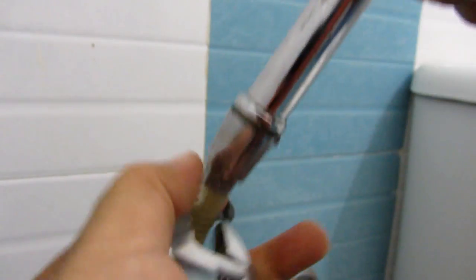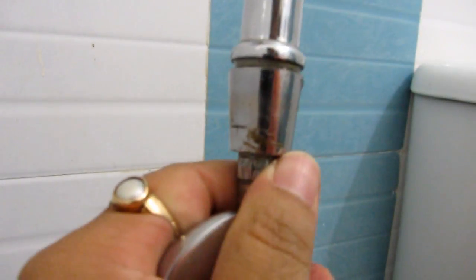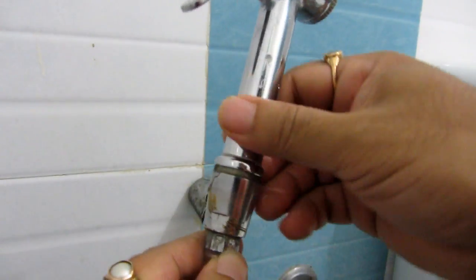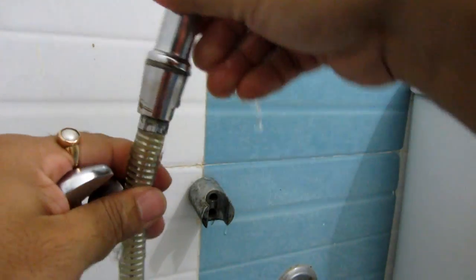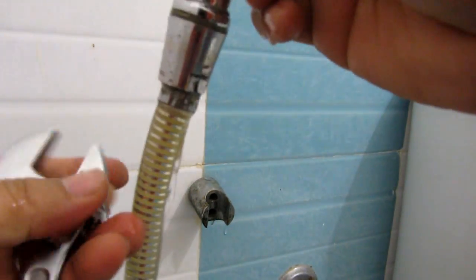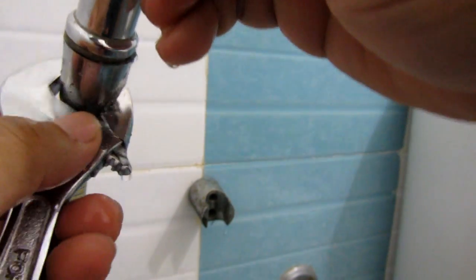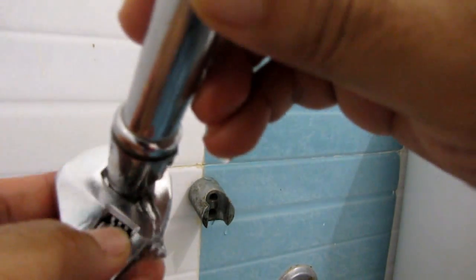I'm just tightening it. Let's see if this helps. Let me switch on the valve. Okay, so there's still a leakage in this pipe. Let me tighten this all over again and see if this really helps.